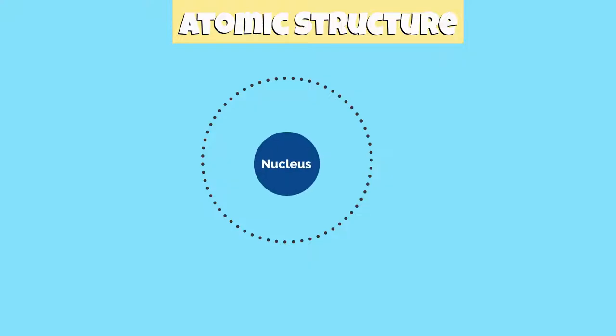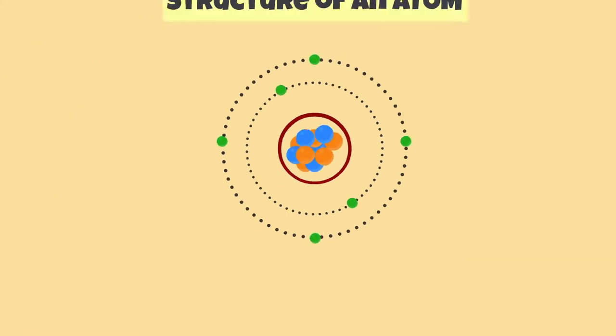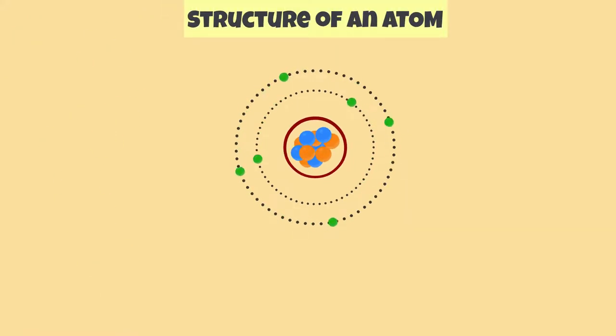An atom has a nucleus at its center and an electron cloud that surrounds it. Protons and neutrons are in the nucleus of an atom, while electrons are in the electron cloud orbiting the nucleus.